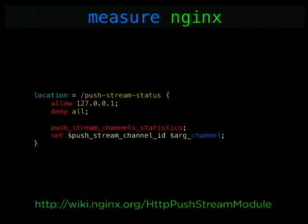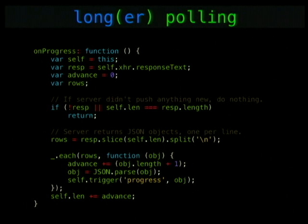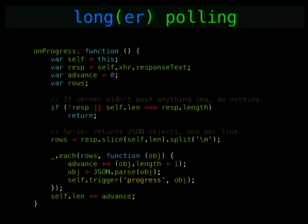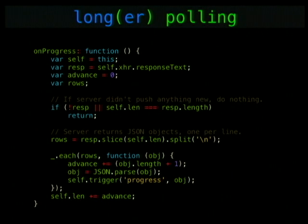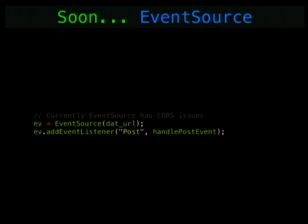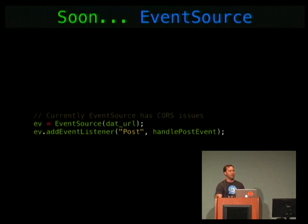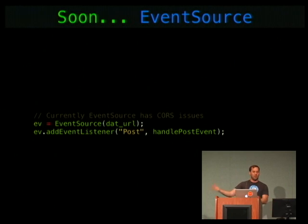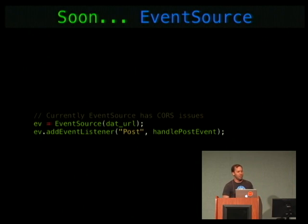On the client side, the original code used the onprogress callback of an XHR request — that was engineer Barack's idea, and he'll be talking about it at HTML5 Dev Conf. We're currently using WebSockets on most clients because WebSockets are fast, but we're moving to EventSource, which is super awesome — it lets the web browser manage the async requests. Instead of JavaScript managing async requests, the browser handles everything and you just register the message type and callback.